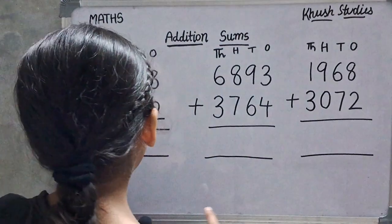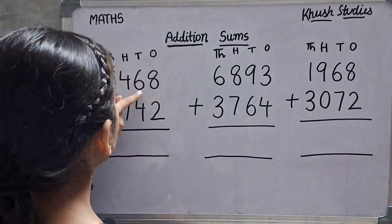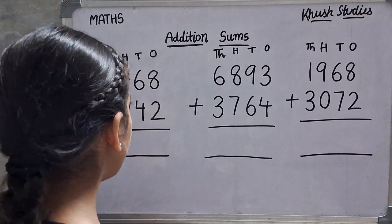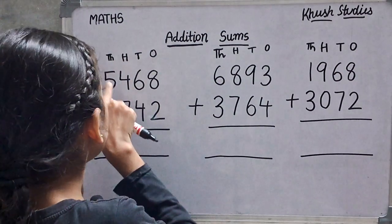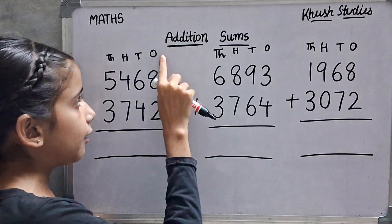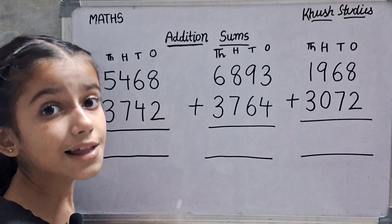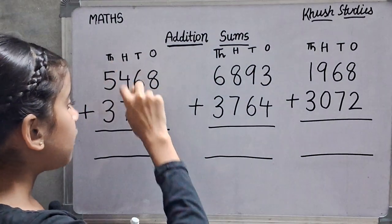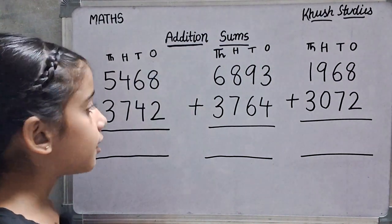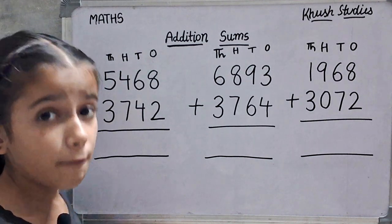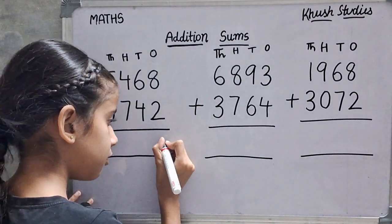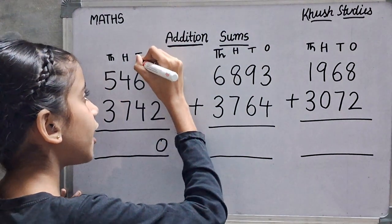We will add 5,468 plus 3,742. First, we will add the ones digit. 8 plus 2 is 10. We will write 1 here.